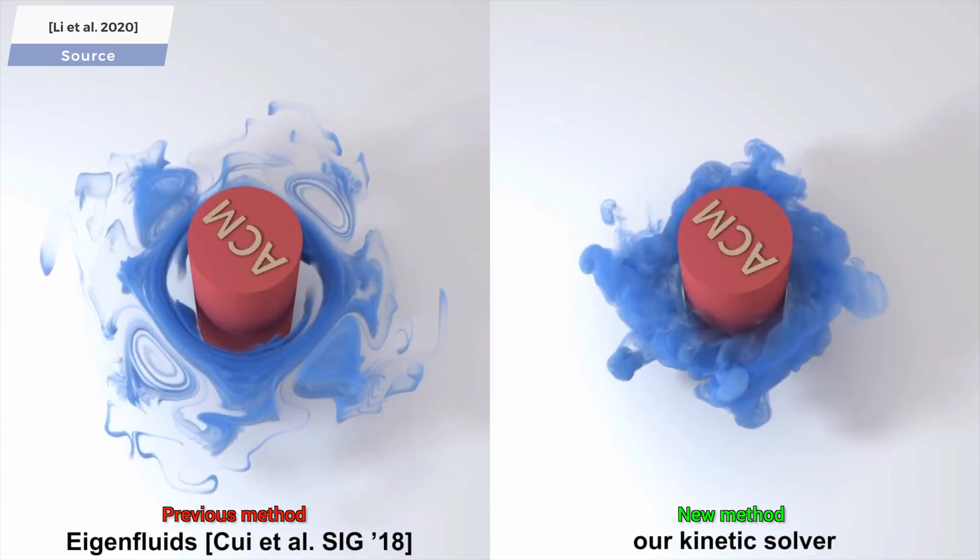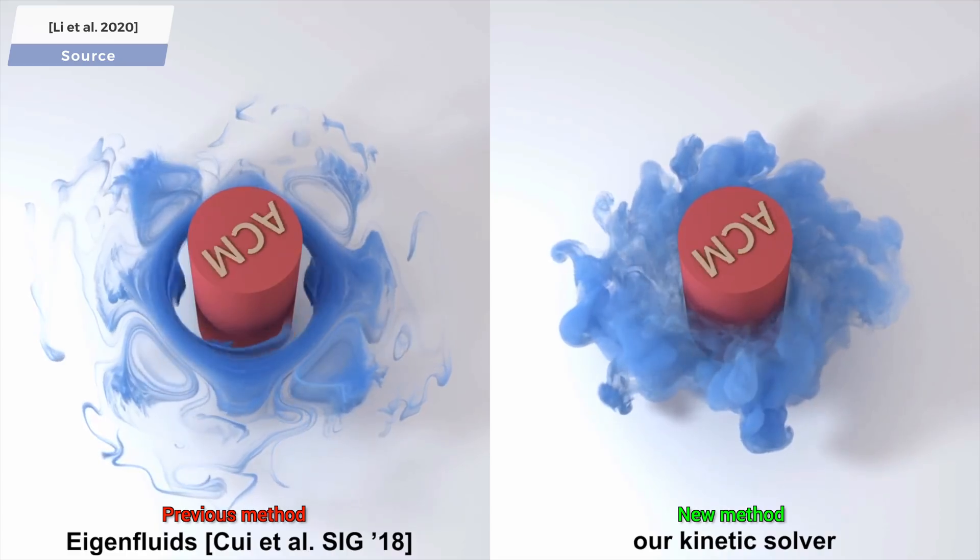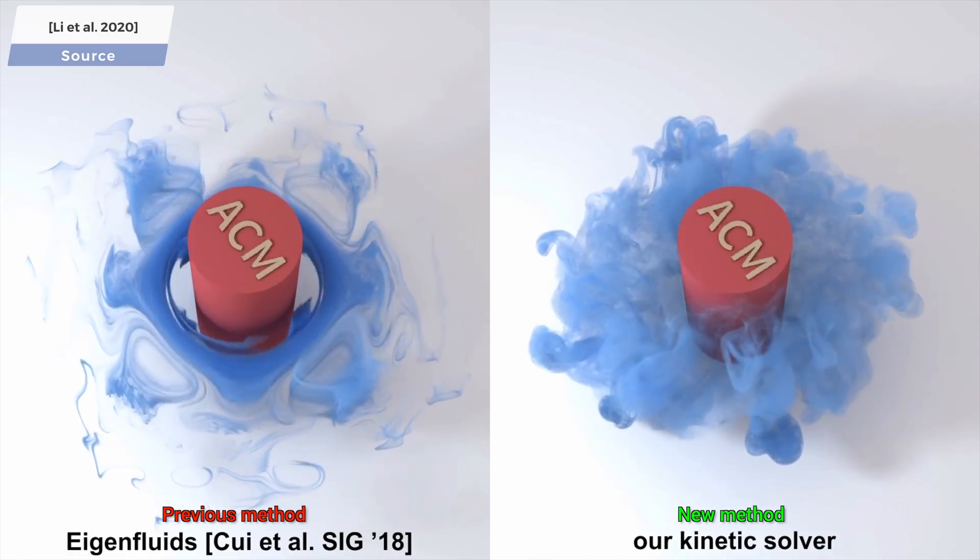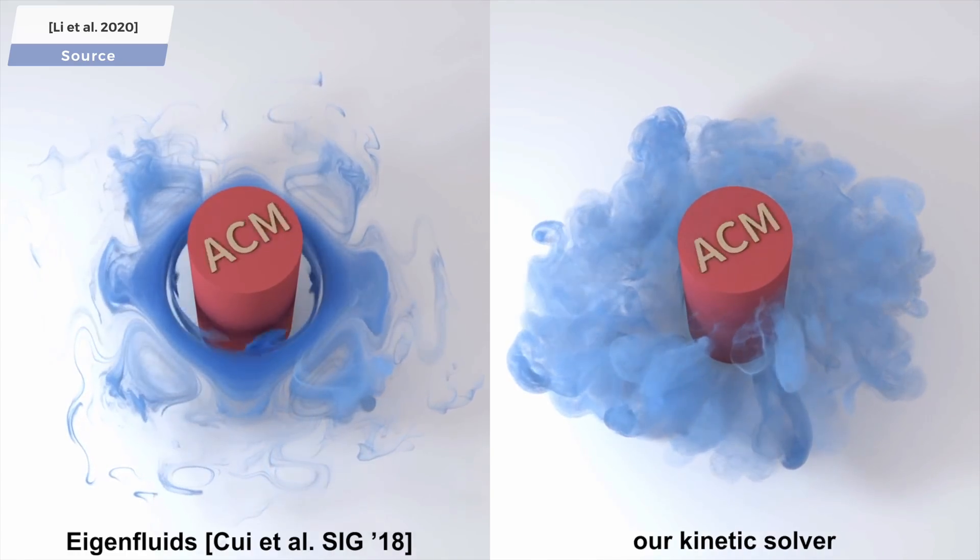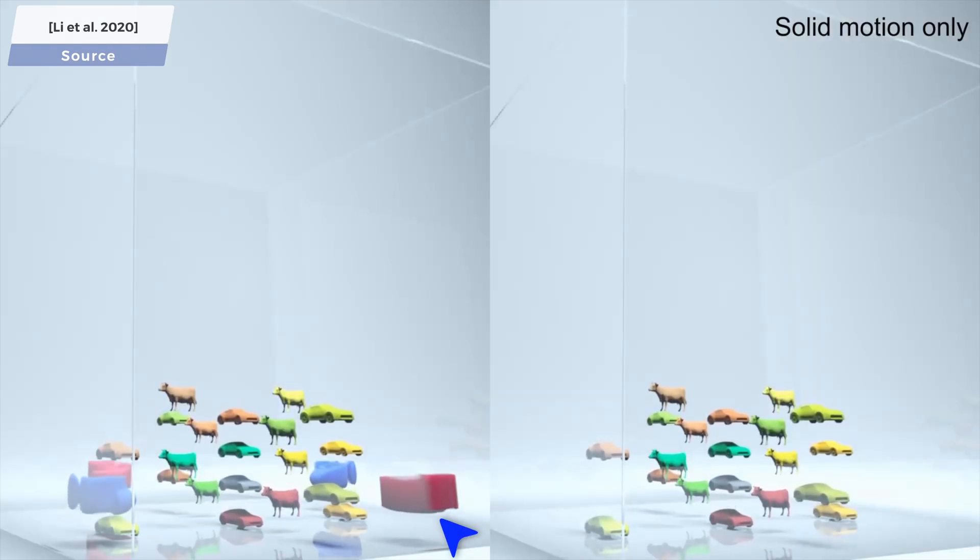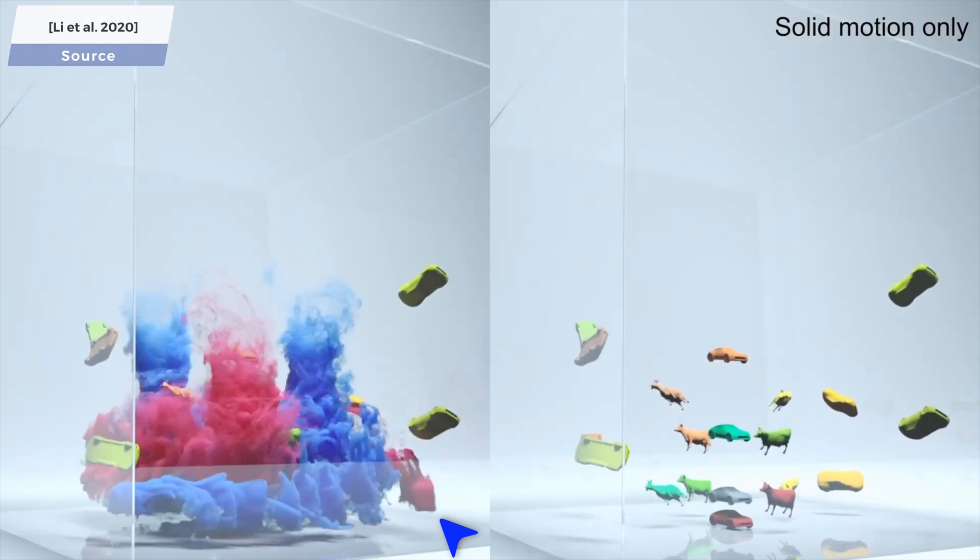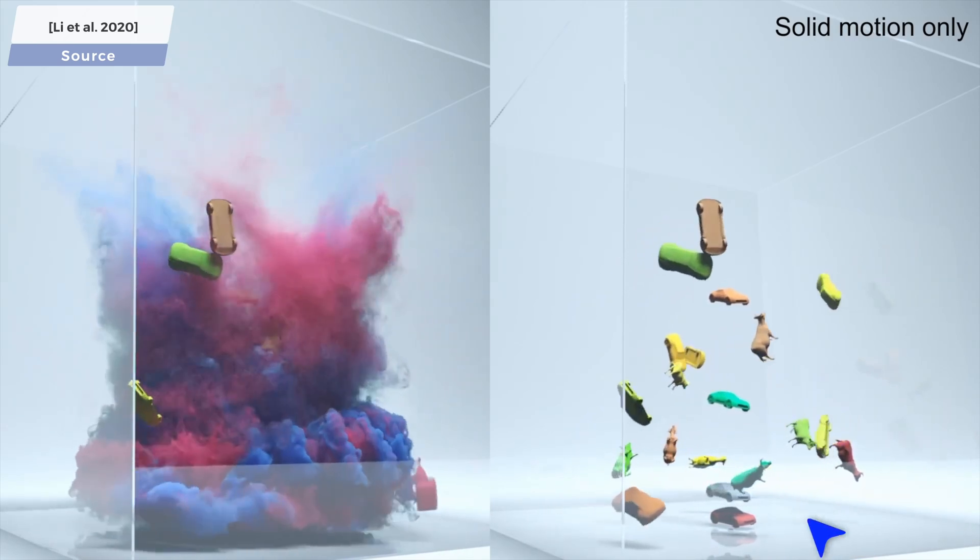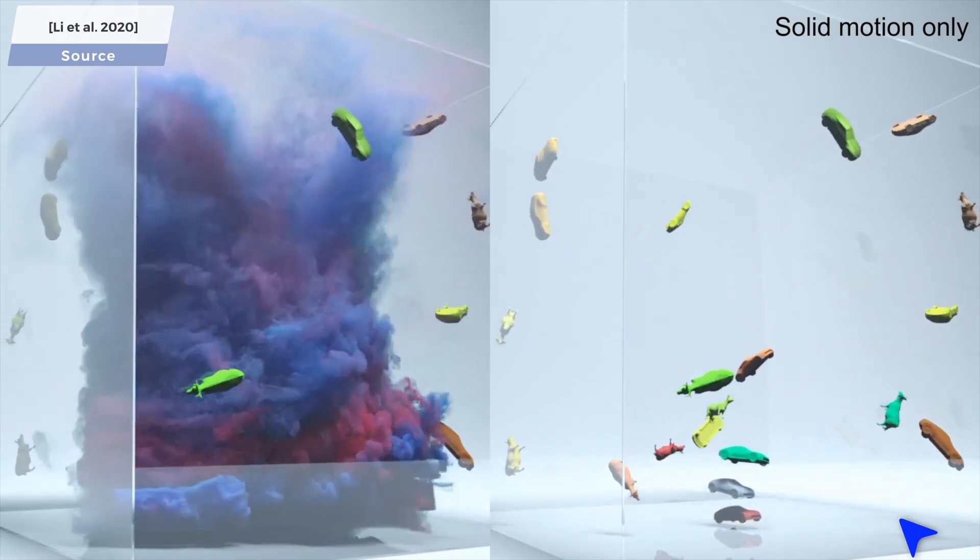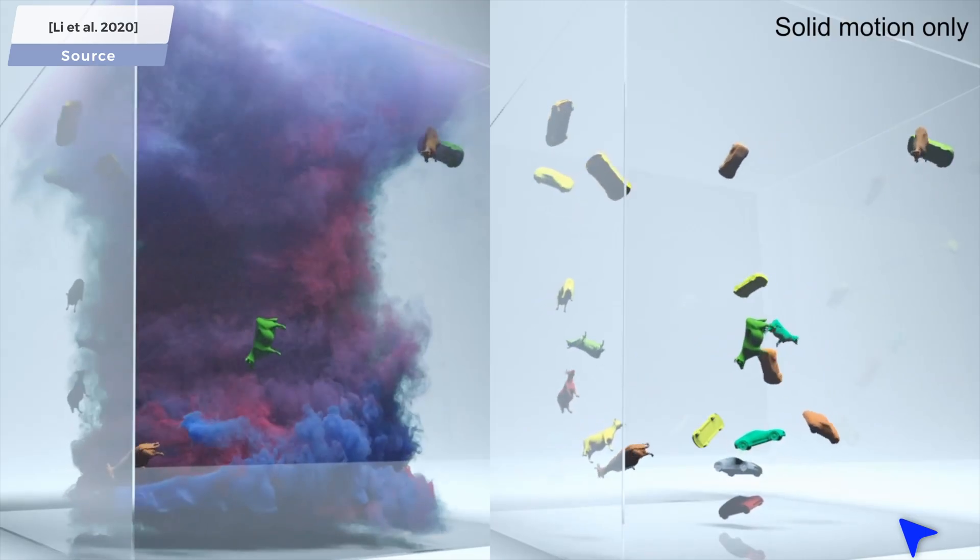So, what else can we do with all this? What are the typical scenarios that require accurate two-way coupling? Well, for instance, it can perform an incredible tornado simulation that you see here, and there is an alternative view where we only see the objects moving about.